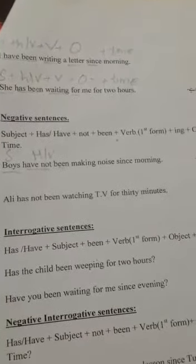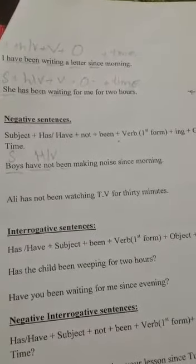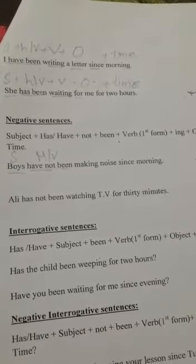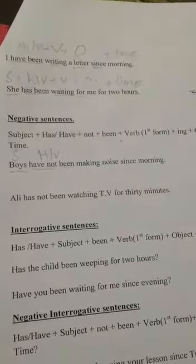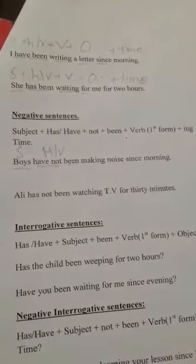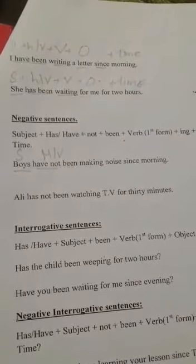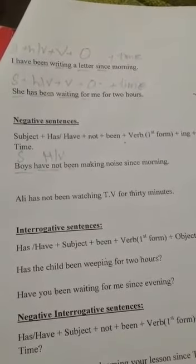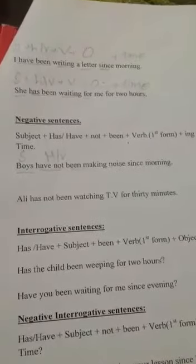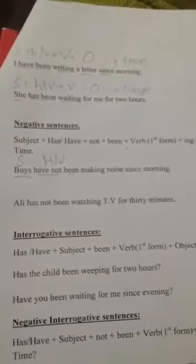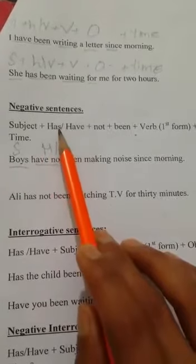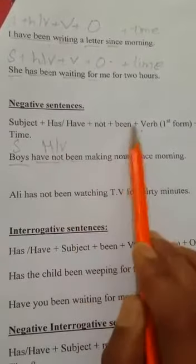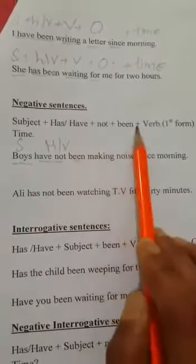Now students, today I am going to teach you the formation of negative sentences in present perfect continuous tense. When we are making a negative sentence of present perfect continuous tense, we write the subject with addition of its helping verb — has not been or have not been — according to the subject.